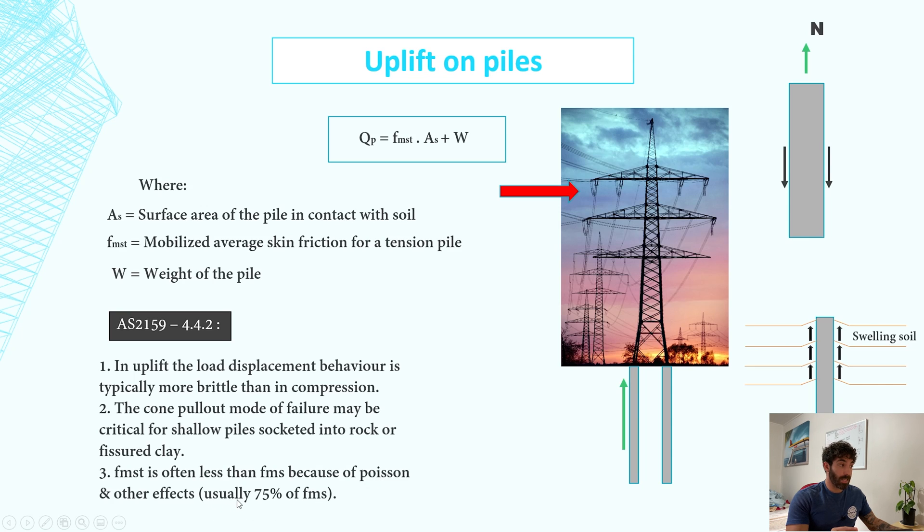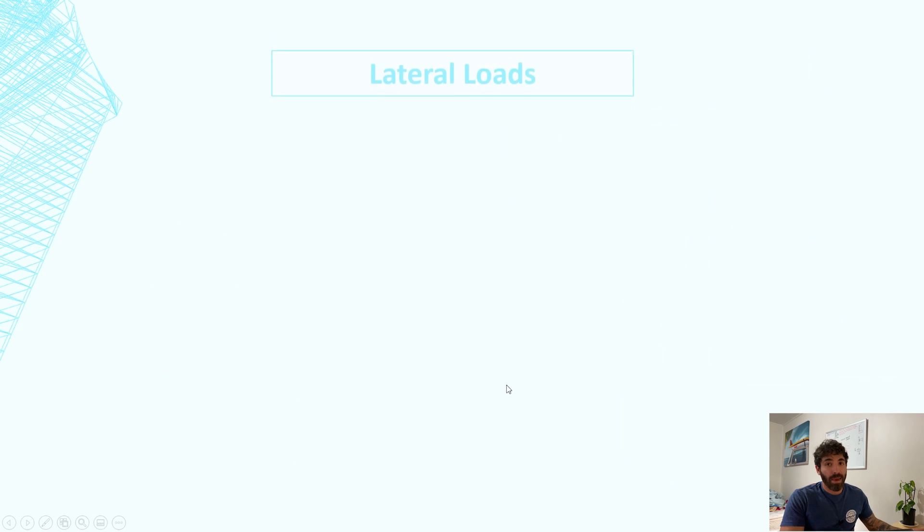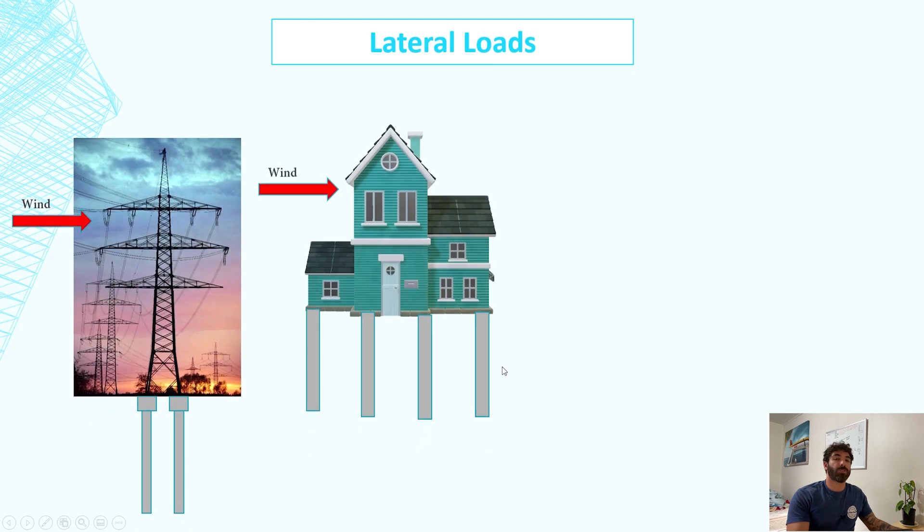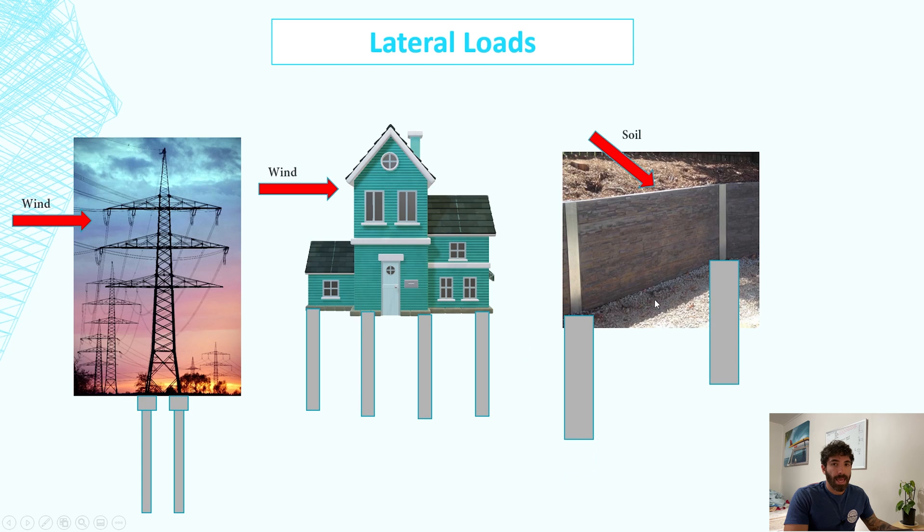Usually f_mst is 75% of f_ms. Different literatures might give different values. That's usually the value that I use. So lateral loads. Wind is the main lateral load on most structures. Soil will also exert lateral loads on retaining walls, and all these forces will cause bending moment on the piles.